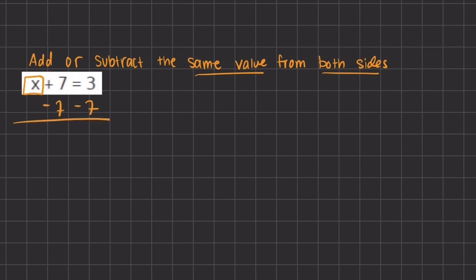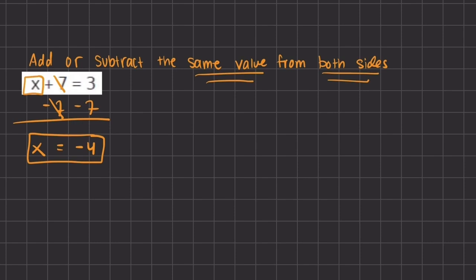On the left hand side, the positive 7 and negative 7 cancel out, leaving just x. On the right hand side, we have 3 minus 7, which gives us negative 4. So x equals negative 4, and this is the simplified value of x. We used the method of adding or subtracting the same value from both sides of the expression.